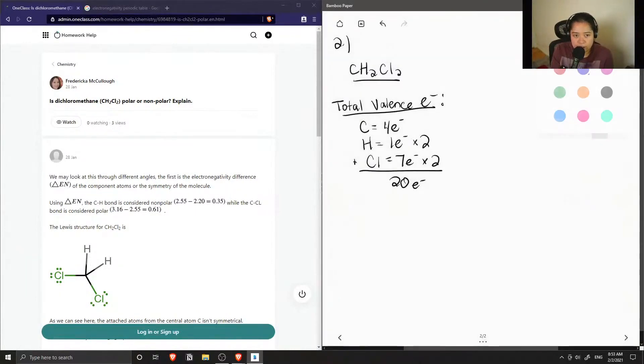So now we can try to draw out a skeletal structure where carbon is our central atom, since it's able to form multiple bonds.